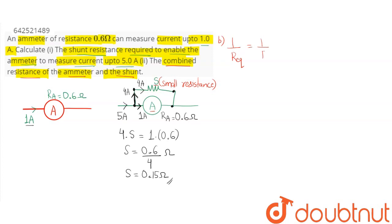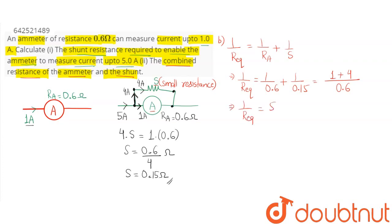For two resistances connected in parallel, their equivalent resistance is given by: 1/R_eq = 1/R_A + 1/S. The ammeter resistance is 0.6 ohm and the shunt resistance is 0.15 ohm. Taking the LCM as 0.6, we get 1/R_eq = (1 + 4)/0.6 = 5/0.6. Therefore, the equivalent resistance is 0.6 ÷ 5 = 0.12 ohm. The combined resistance of the ammeter and the shunt is 0.12 ohm.